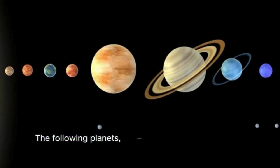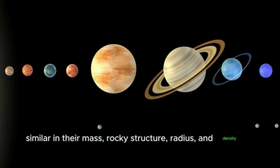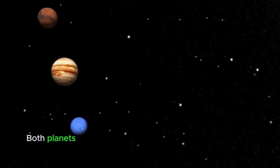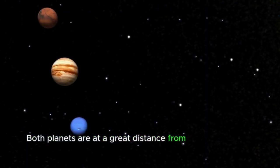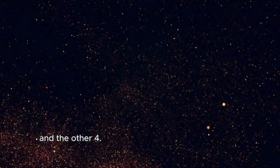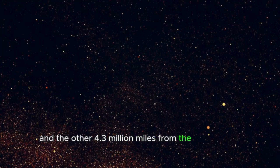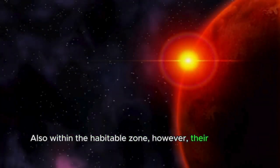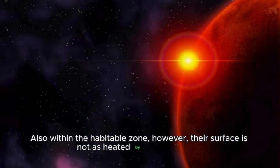The following planets, TRAPPIST-1f and 1g, are also presumed to be generally similar in their mass, rocky structure, radius, and density to planet 1e. However, that's where the similarities end. Both planets are at a great distance from the star, one 3.6 million miles away and the other 4.3 million miles from the parent star, respectively. Also within the habitable zone, however, their surface is not as heated by the red dwarf.